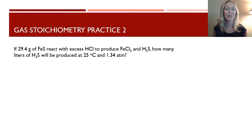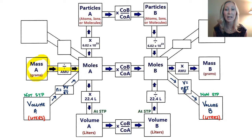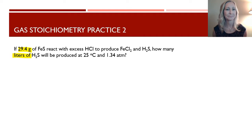Let's try another problem. We have 29.4 grams of iron(II) sulfide reacting with hydrochloric acid to produce FeCl₂ and H₂S. How many liters of H₂S will be produced at 25°C and 1.34 atmospheres? We start with mass, find moles, use the mole ratio to get moles of H₂S, then find the volume using the ideal gas law.